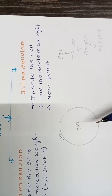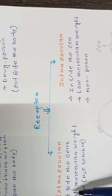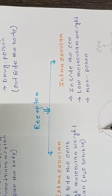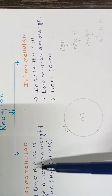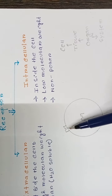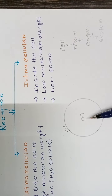Based on position, receptors are of two types. One is extracellular — meaning outside the cell — where the receptor is present outside the cell. The other is intracellular receptor, which is present inside the cell. So extracellular receptor means the receptor is present outside, and intracellular receptor means it is present inside the cell.